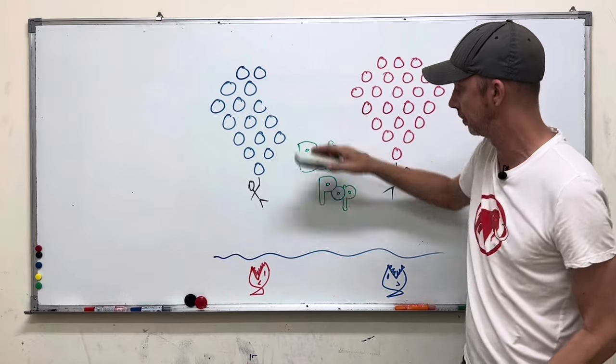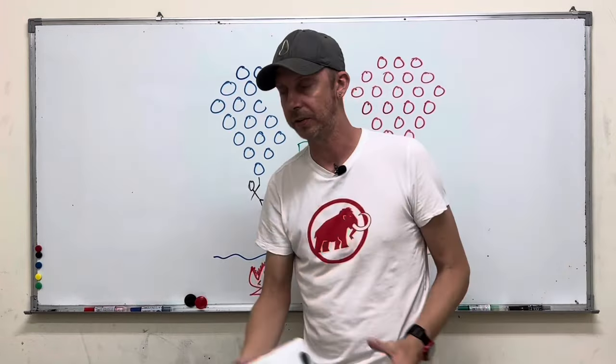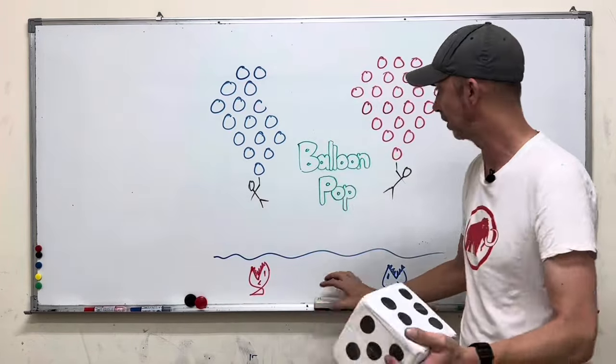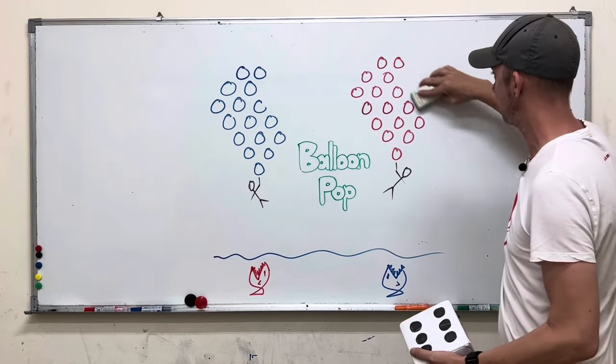We're going to delete six of these balloons but the red team also gets a chance so they roll a dice. It's also a six. We're going to delete six of these. It's even.